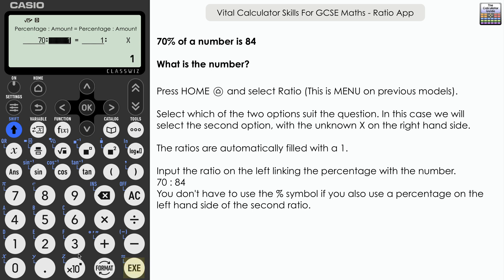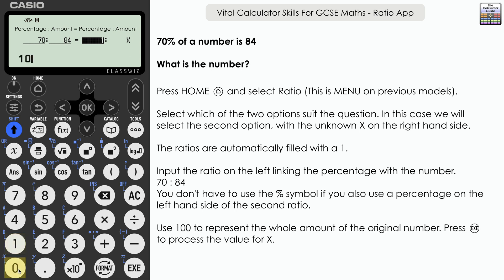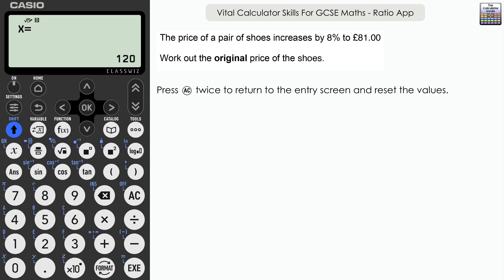On the right-hand side, I'm going to link that with the amount given — in this question, that's 84. 70% is 84. For the left-hand part of the right-side ratio, we represent the whole original number as 100%. So input 100, press Execute, then Execute again to process. We can see X equals 120 — that's our original number, so the answer is 120. Press AC to return to the input screen, then AC again to clear back to default.